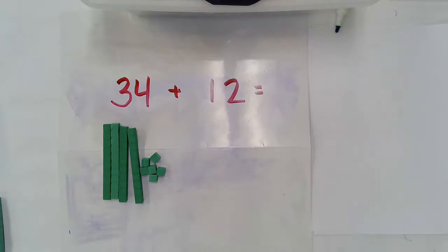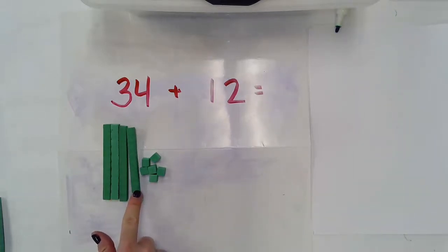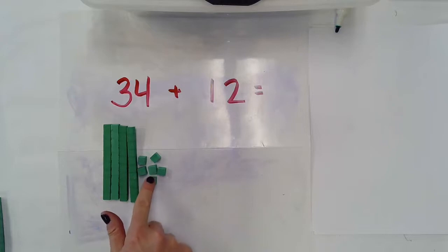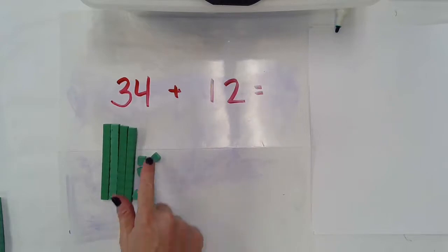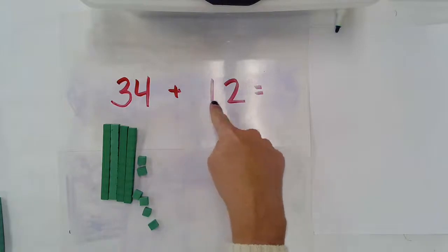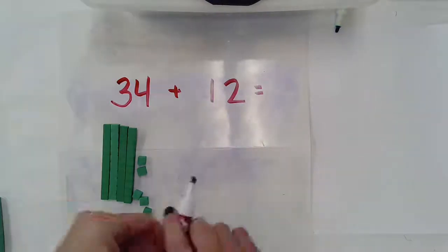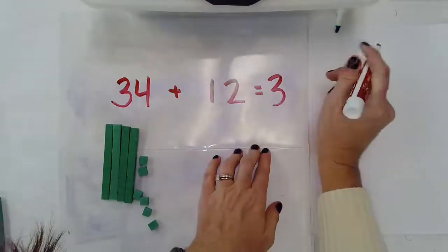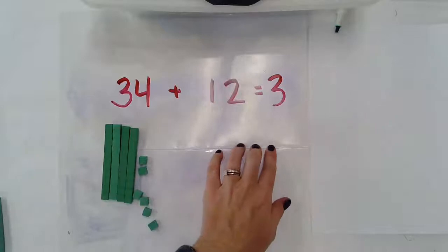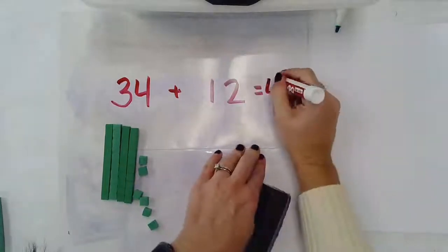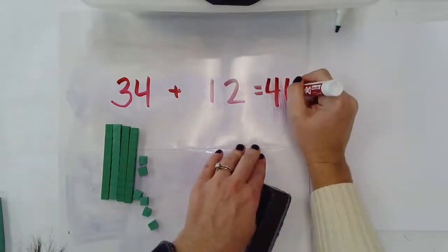10, 20, 30, 40, 41, 42, 43, 44, 45, and 46. So 34 plus 12 gives me 46.